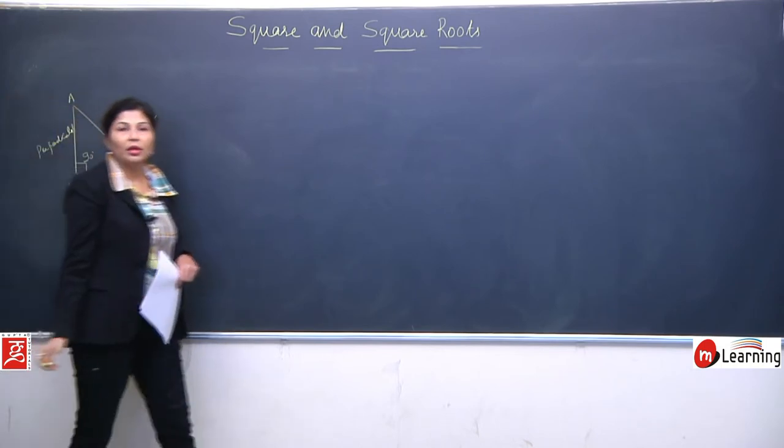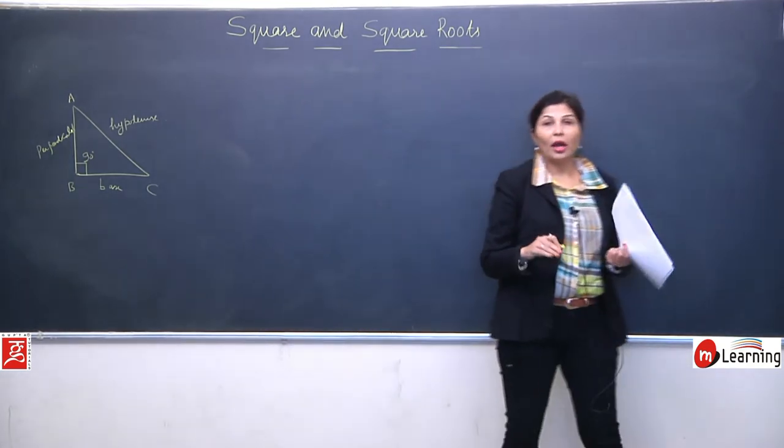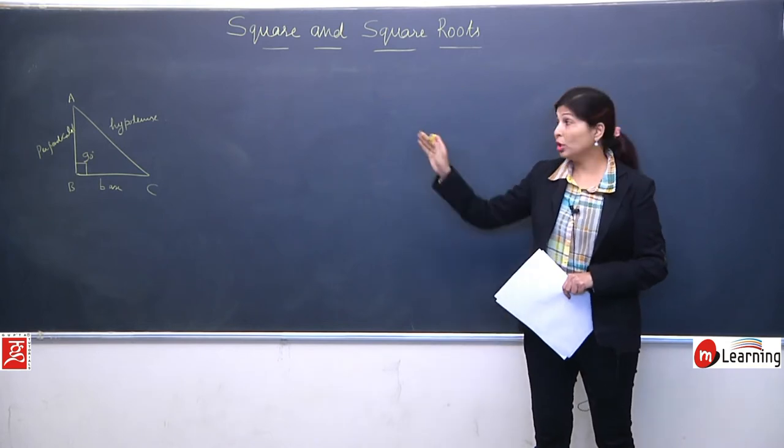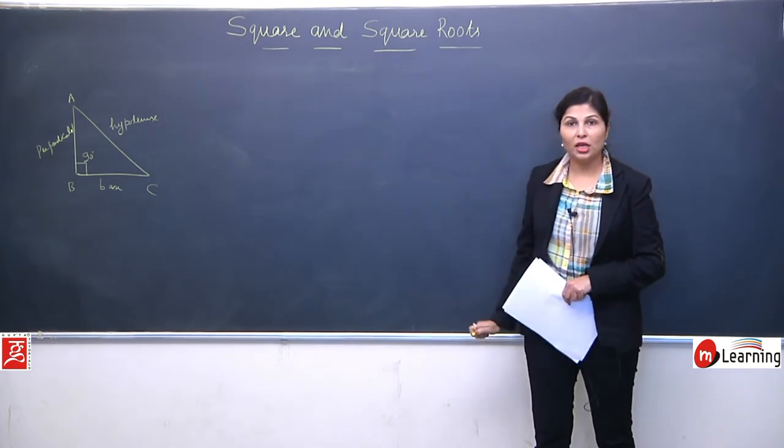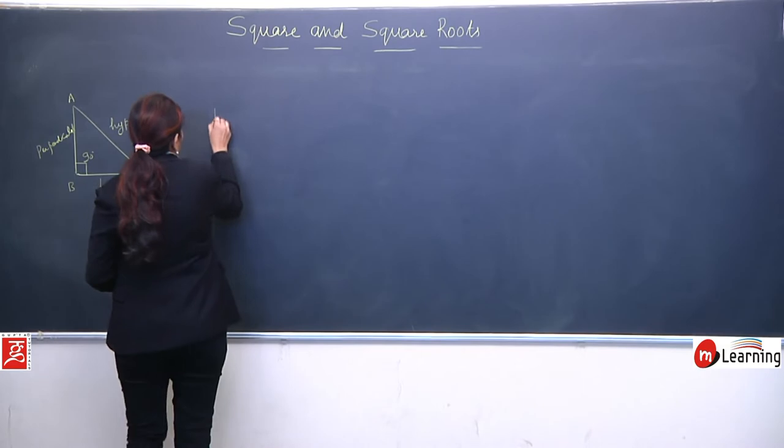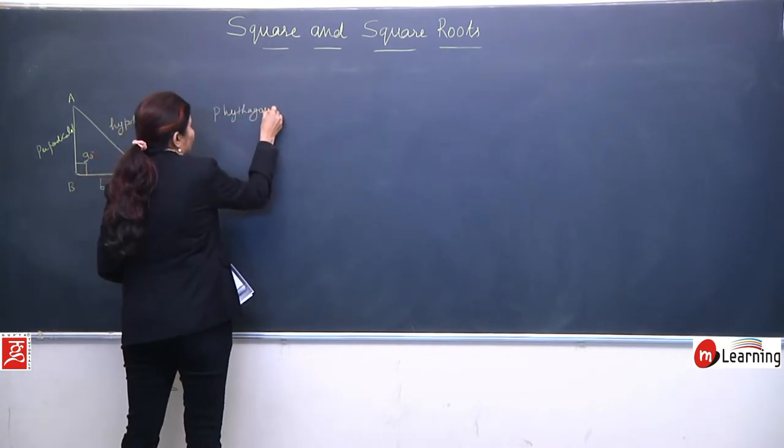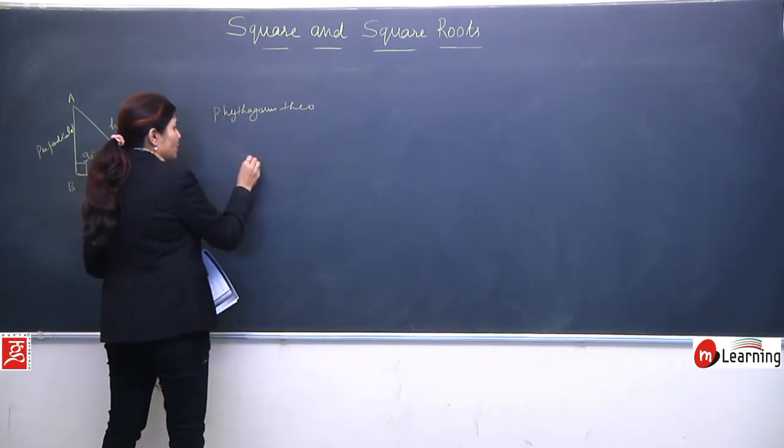Means a 90 degree triangle, means right angle triangle, is always having one base, one perpendicular, and opposite of 90 degrees is always hypotenuse. The hypotenuse will be the largest, which is opposite to 90 degrees. We should know this. Second important property that applies in right angle triangle is known as Pythagoras theorem.